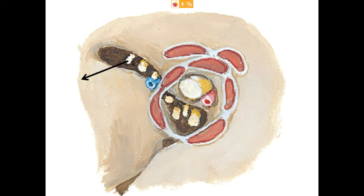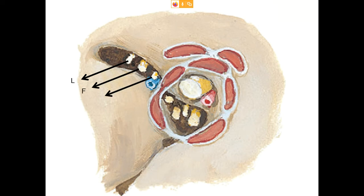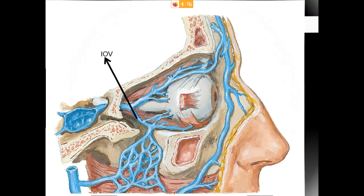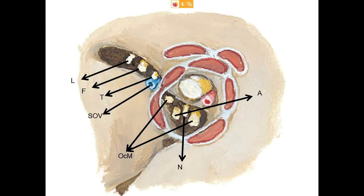The common tendinous ring of Zinn separates the superior orbital fissure into three compartments: lateral, intermediate, and medial. The lateral compartment transmits three nerves — lacrimal, frontal, and trochlear — along with the superior ophthalmic vein. The intermediate compartment transmits the nasociliary nerve and two divisions of the oculomotor nerve and the abducens. The medial compartment transmits the inferior ophthalmic vein, which sometimes may pass through the inferior orbital fissure instead.